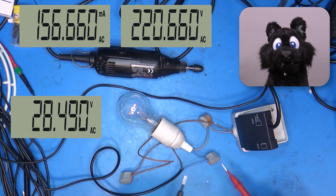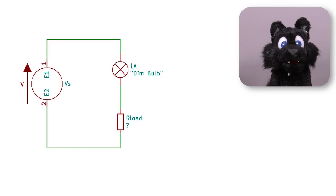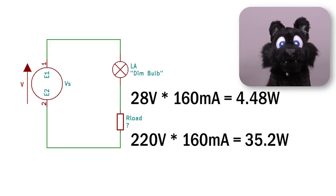At the given current we have about 35 watt at the Dremel and 4 watt at the bulb. Clearly, the bulb is providing next to no limiting yet.